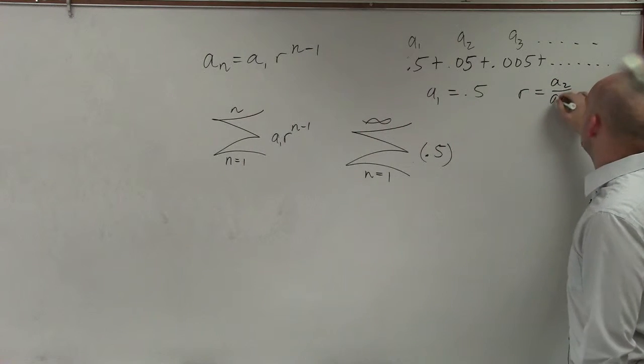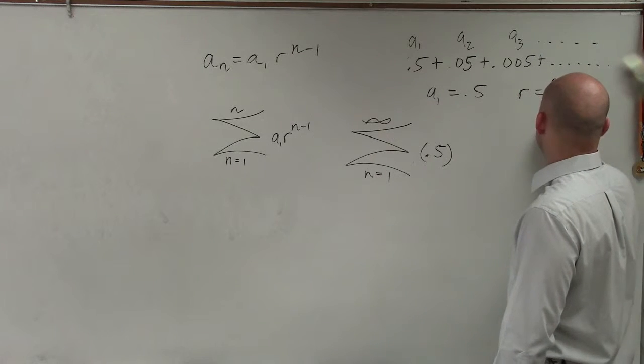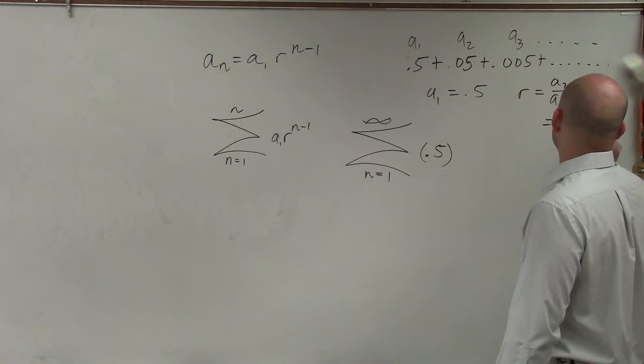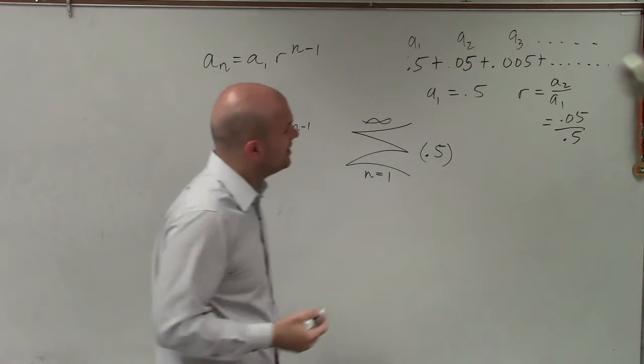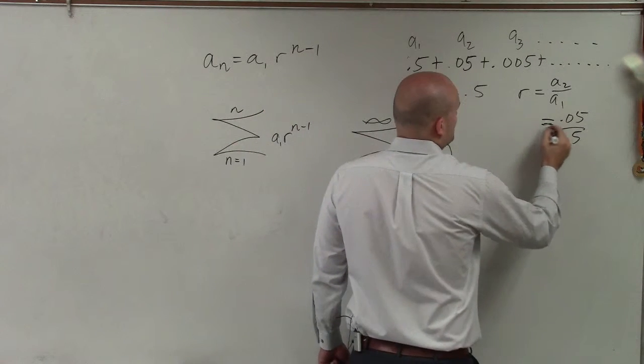So that's going to be a₂ divided by a₁. All I'm going to do is take 0.05 divided by 0.5, and one thing I can do is multiply by 10 over 10 to help me out with this.